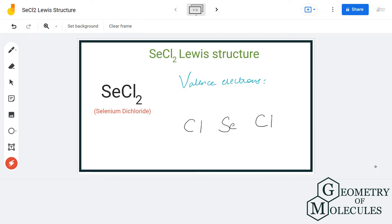Here we have one selenium atom which has six valence electrons, and each chlorine atom has seven valence electrons. So we have a total of 20 valence electrons for this molecule.